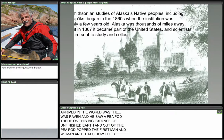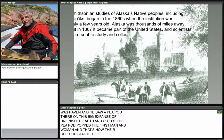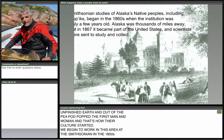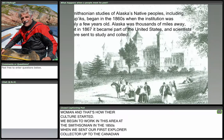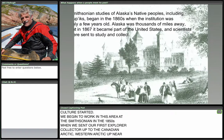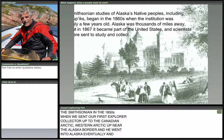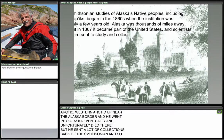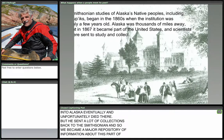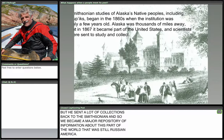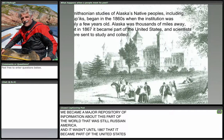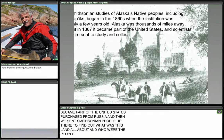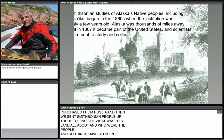We began to work in this area at the Smithsonian in the 1850s when we sent our first explorer-collector, Robert Kennecott, up to the Canadian and western Arctic near the Alaska border. He went into Alaska and unfortunately died there, but sent a lot of collections back to the Smithsonian. At the time it was still Russian America — it wasn't until 1867 that Alaska became part of the United States. We then sent Smithsonian people up there to find out what this land was about. These things have been on exhibit and in study here for over 150 years.